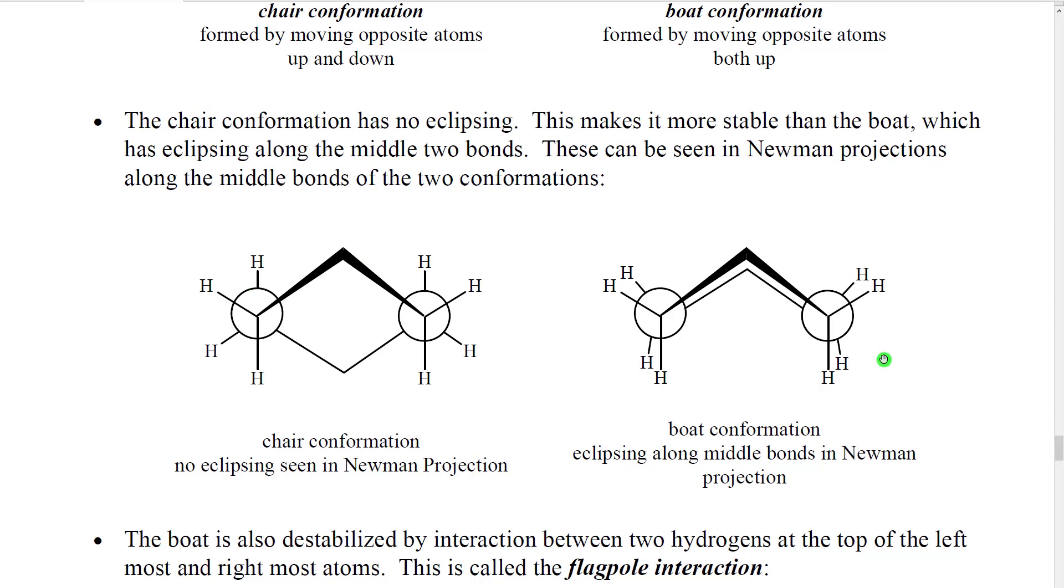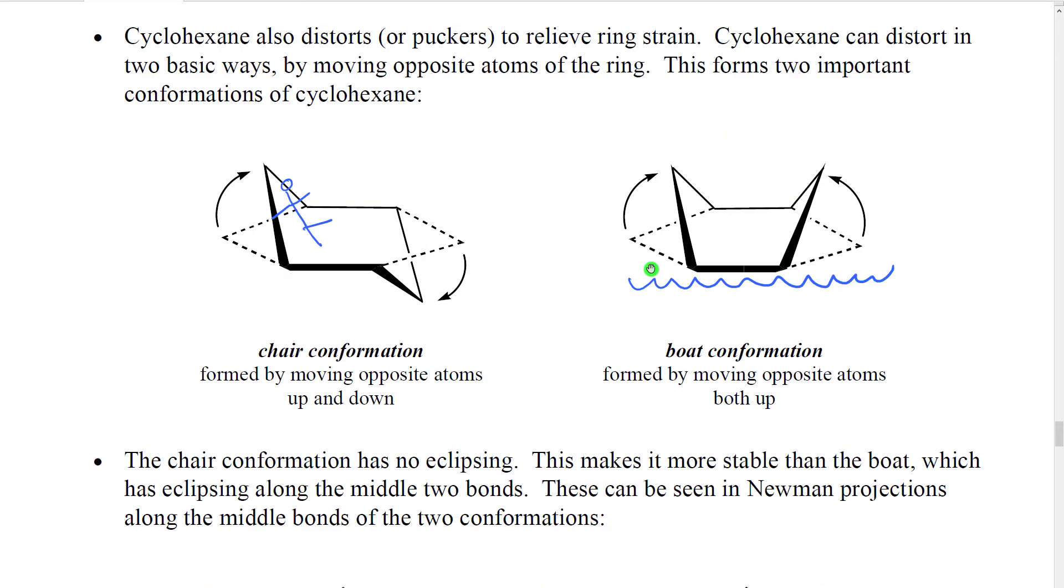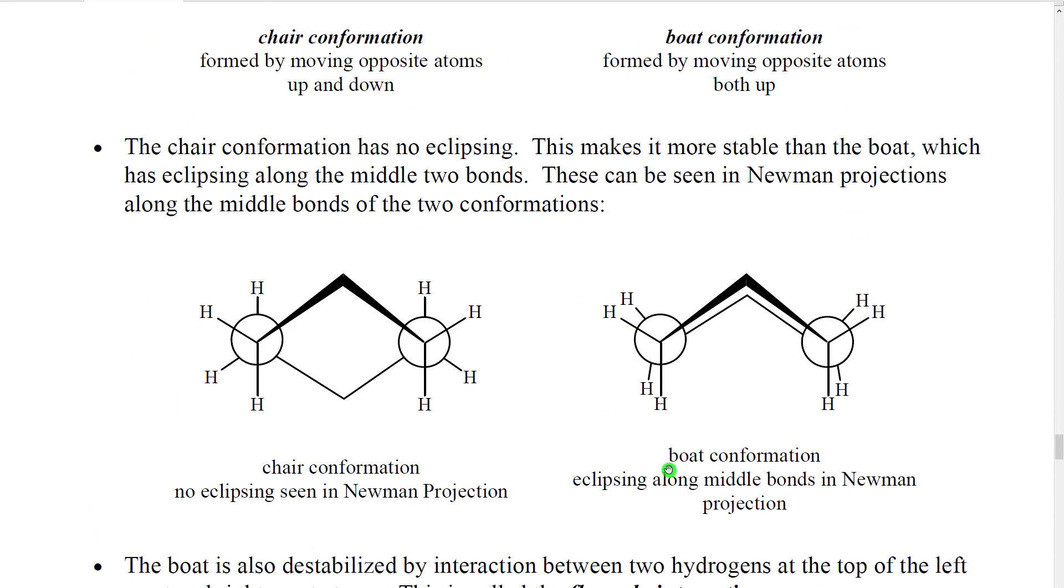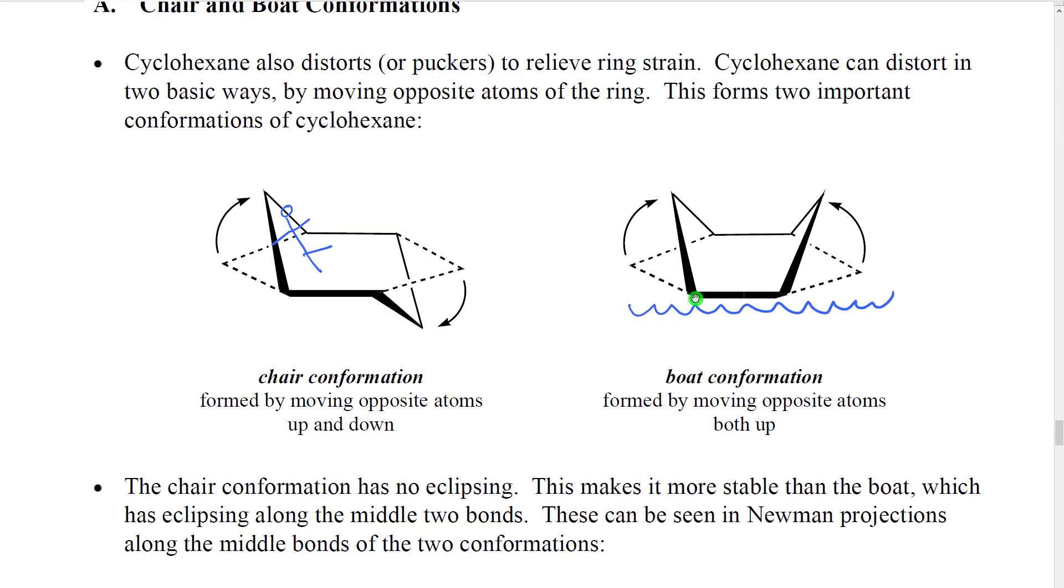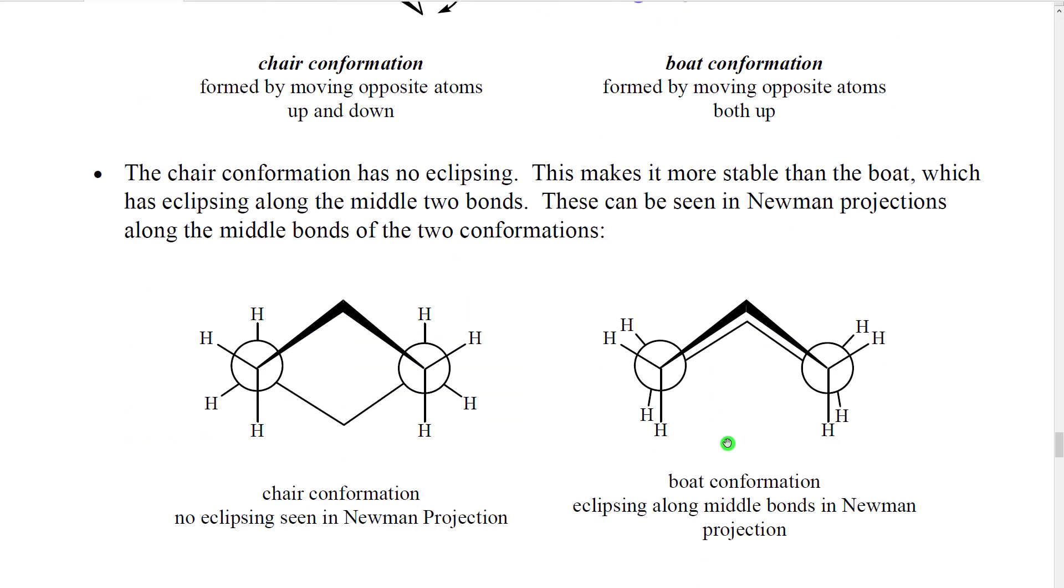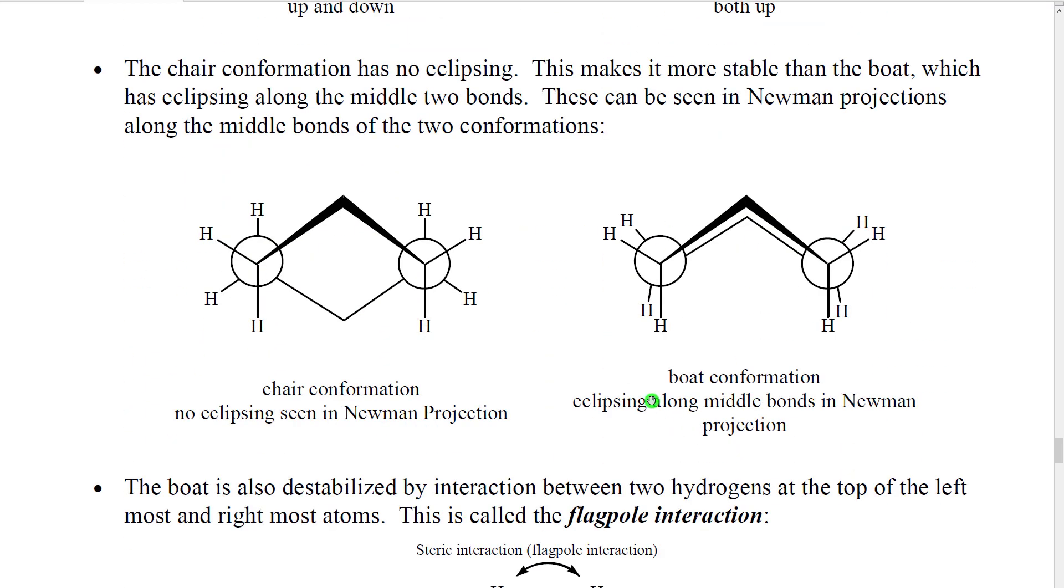In contrast, the boat is not quite as stable. If we look down the two sides here, we actually see a great deal of eclipsing. However, if we look down one of these bonds, we see that it does become somewhat staggered. So we have some staggered, but still some eclipsing.